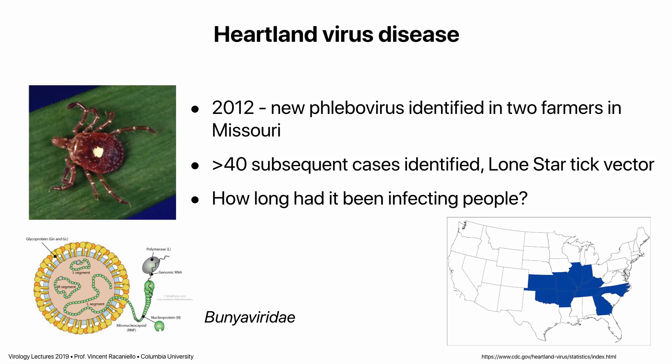Heartland virus disease, a Phlebovirus and also a Bunyavirus, was discovered in 2012, identified in two farmers in Missouri who came in with high fever and thrombocytopenia. The only thing they had in common was being covered with ticks daily. Blood sequencing found a brand-new virus. It has since been found in 40 other individuals and is spread by the lone star tick. We don't know how long it has been infecting people — probably a long time — but we only recently gained the ability to sequence blood nucleic acids and discover these viruses.